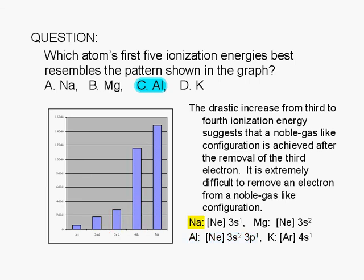For sodium and potassium, we would expect a drastic increase going from the 1st to 2nd ionization energy, because removal of the first electron leaves behind a noble gas core, from which it would be much more difficult to remove a 2nd electron. Similarly, we would expect a drastic increase from the 2nd to 3rd ionization energy for magnesium.